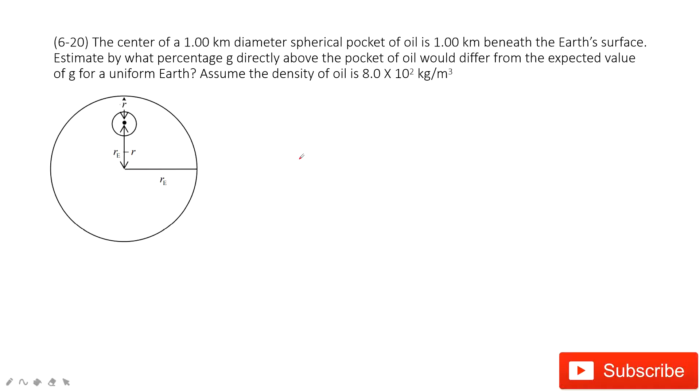In this one, things are a little bit complicated. First thing we see is the center of 1 km diameter. This is a pocket.